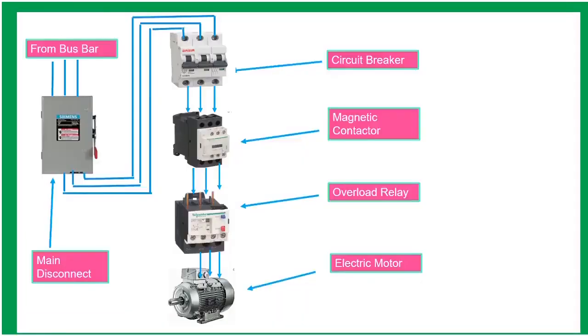This is the usual setup of motor control, from the bus bar going to the main disconnect. The purpose of main disconnect is to shut off the entire circuit. And the circuit breaker is designed to protect electrical circuit from short circuit and ground fault circuit interruptions.